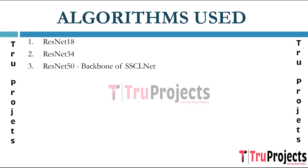SSCLNet is a novel deep learning network designed for the classification of brain MRI images. It stands for self-supervised contrastive loss-based network. The architecture leverages self-supervised learning, specifically contrastive loss, for pre-training on unlabeled data. This pre-training aims to enhance feature learning by exposing the network to augmented instances of the dataset. SSCLNet utilizes ResNet as its base architecture, known for its ability to capture both low and high-level features. ResNet architectures leverage residual connections that allow for direct flow of information through the network, helping mitigate the vanishing gradient problem and enabling effective training of very deep networks.